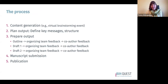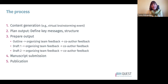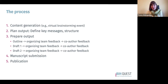In terms of the process, there are essentially five steps. We start with generating content through a virtual brainstorming event. Next, you plan your output by defining key messages and the paper's structure. Then you prepare the output in three phases: outline, first draft, and second draft — each going through feedback from the organizing team and all co-authors with revisions. By the time you're through the second draft, it's usually close to ready to submit. Finally, manuscript submission proceeds as normal until accepted for publication.